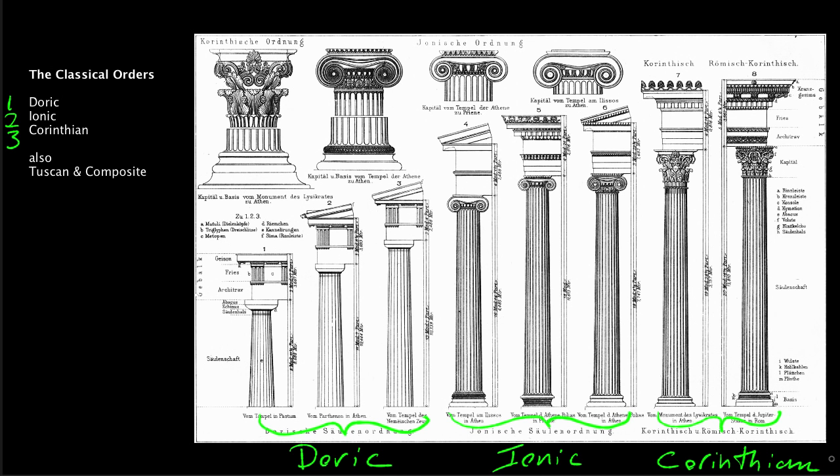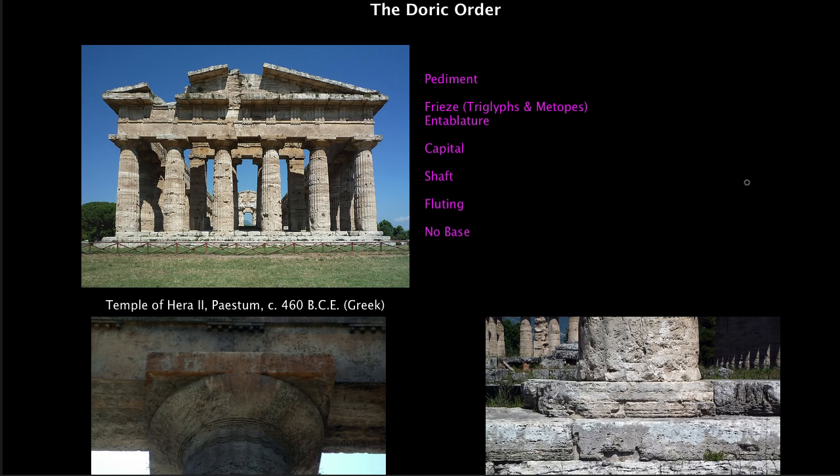The Doric, Ionic, and Corinthian are illustrated here in this diagram. The Doric is the most simple, the Ionic a little more complicated, and the Corinthian completely out of control. Let's start with the oldest order, the Doric, which we think began in the seventh century on the mainland in Greece. We're looking at an actual Greek temple that happens to be in Italy — a great example of the Doric in the classical era.